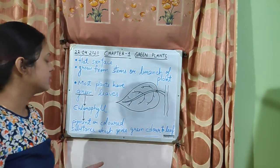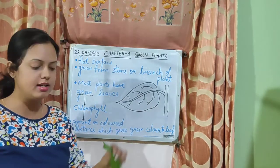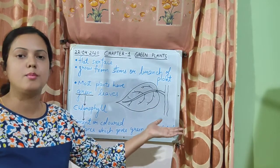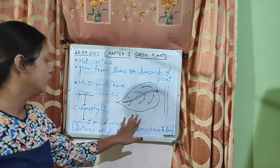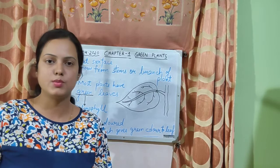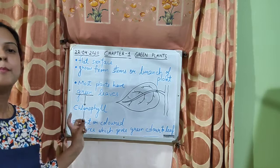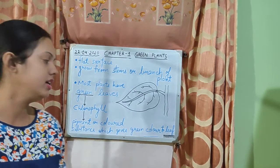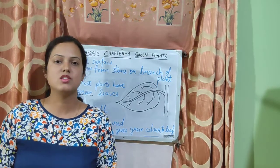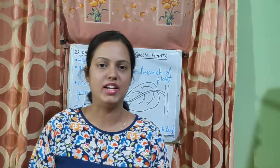So what we learned in this class: the basic details of the leaf. First, the leaf always has a flat surface. Second, leaves grow from the stem or branch of the plant. Third, the leaves are of green color because chlorophyll is present in the leaves. Chlorophyll is a pigment — a colored substance — which gives green color to the leaves. In the next video, we will learn the structure of the leaf. Thank you.